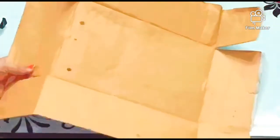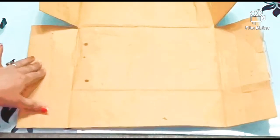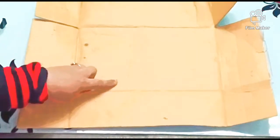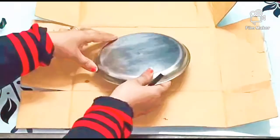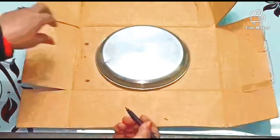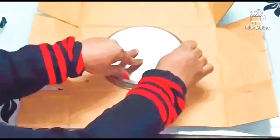Hello friends, welcome to our channel. Today we are going to make a New Year wall hanging. Let's tell you the material first. We'll take a cardboard and plate for making a circle. Now let's draw the circle.